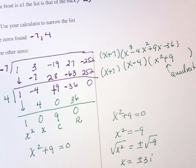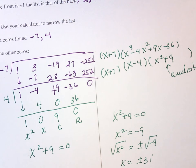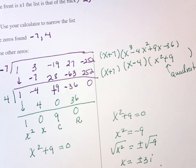So, how many zeroes does it have? Well, my zeroes are negative 7, positive 4, 3i minus 3i. And, if I know the zeroes, then I know the?